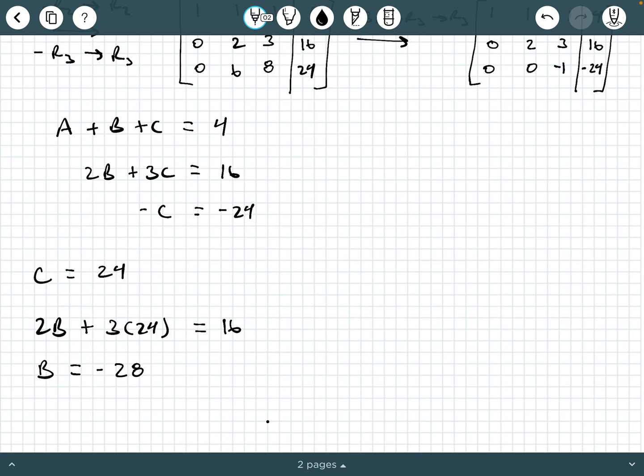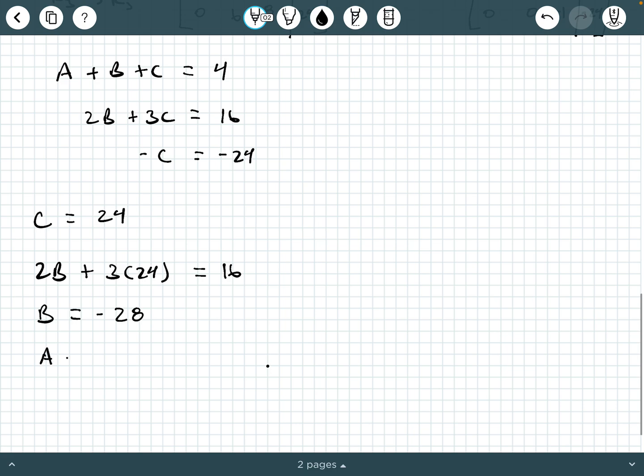And then we're going to solve for A here. We're going to say A - 28 + 24 equals 4. And so what do we get? We get -28 + 24. And then I think we get A equals positive 8.